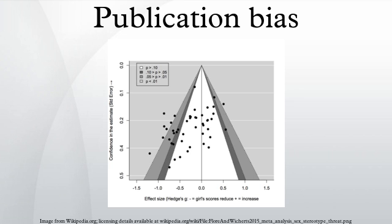Risks: John Ioannidis argues that claimed research findings may often be simply accurate measures of the prevailing bias factors. Factors he enumerates as making positive papers likely to enter the literature and causing negative papers to be suppressed include: the studies conducted in a field are smaller, effect sizes are smaller, and there is a greater number and lesser pre-selection of tested relationships.